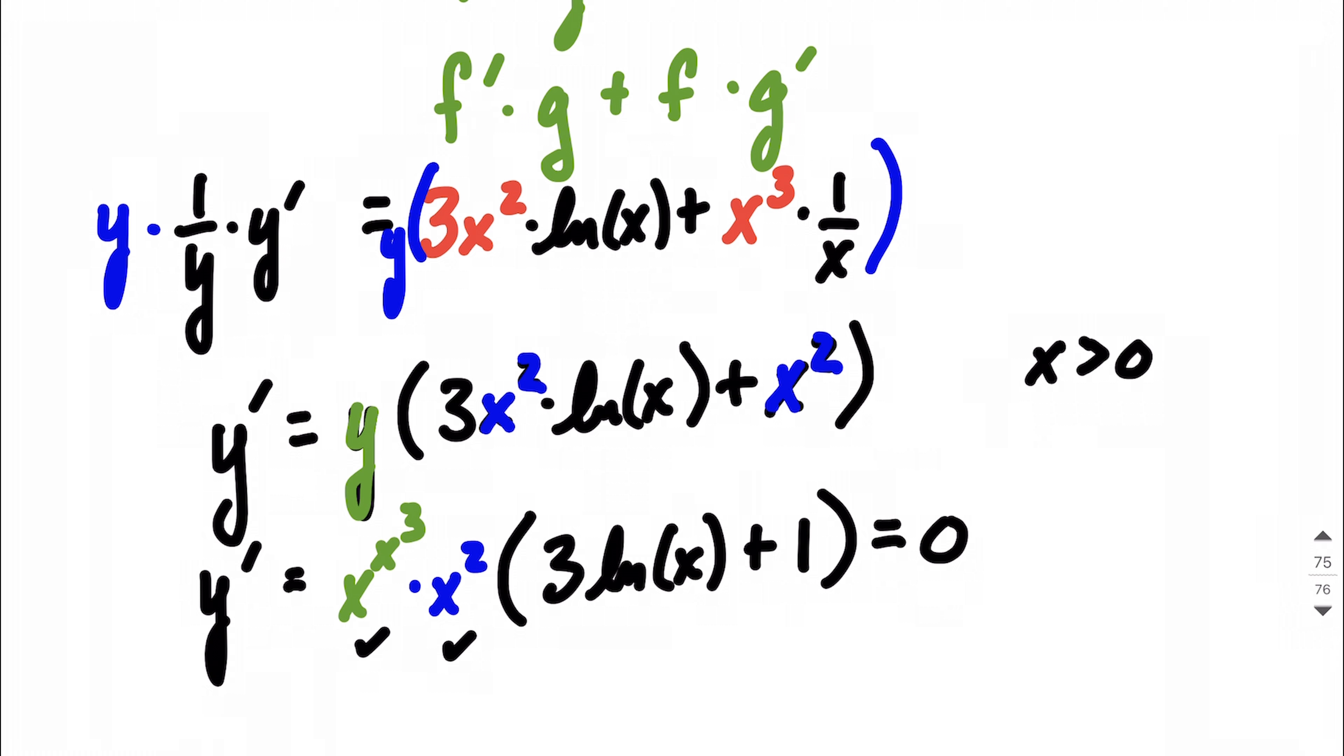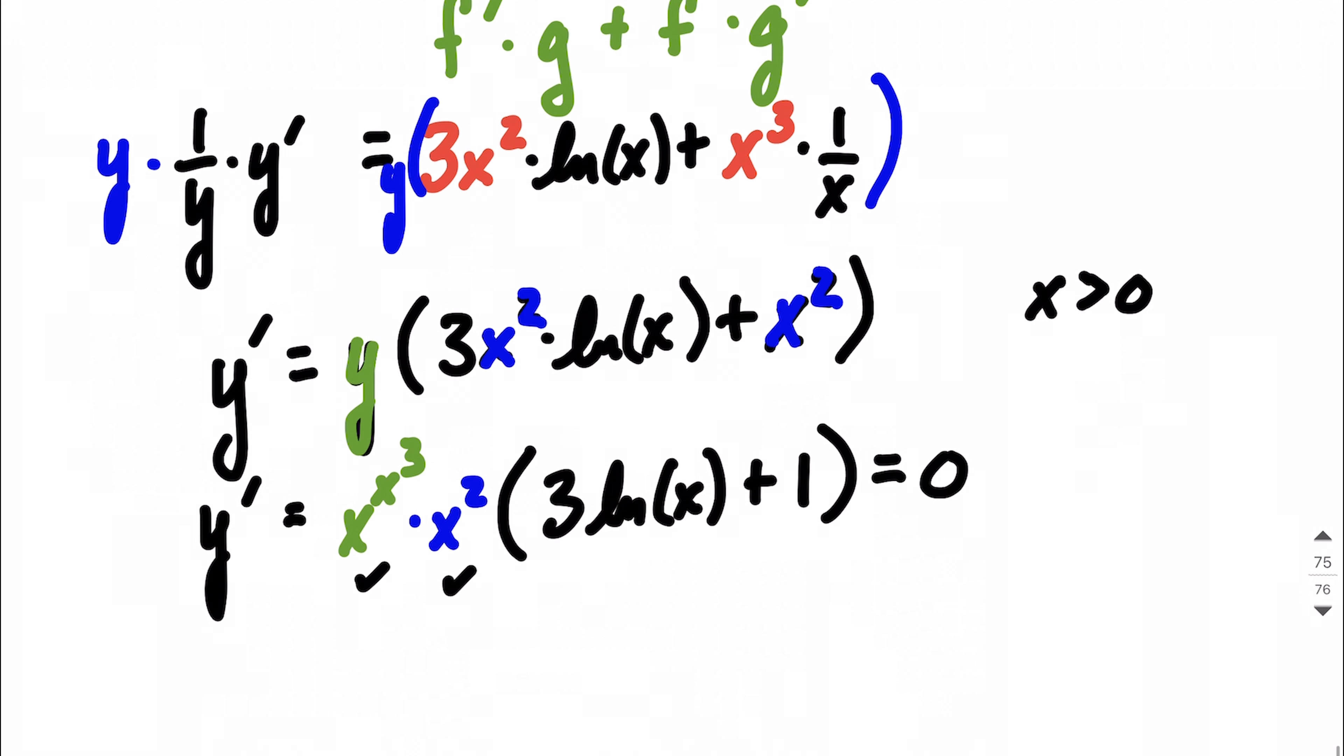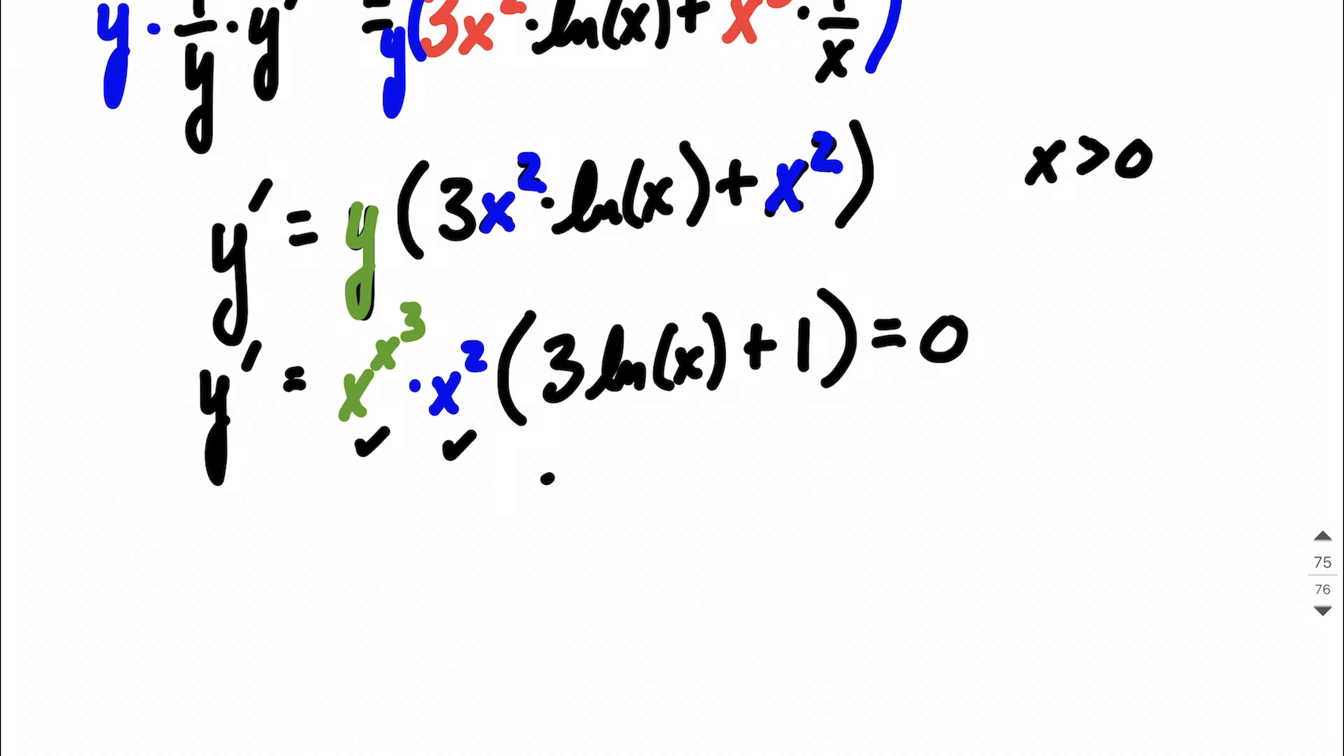So really what we're left with is, because we already factored it, figuring out when is this factor, 3 times the natural log of x plus 1 equal to 0. Zero product property we're using in this case.